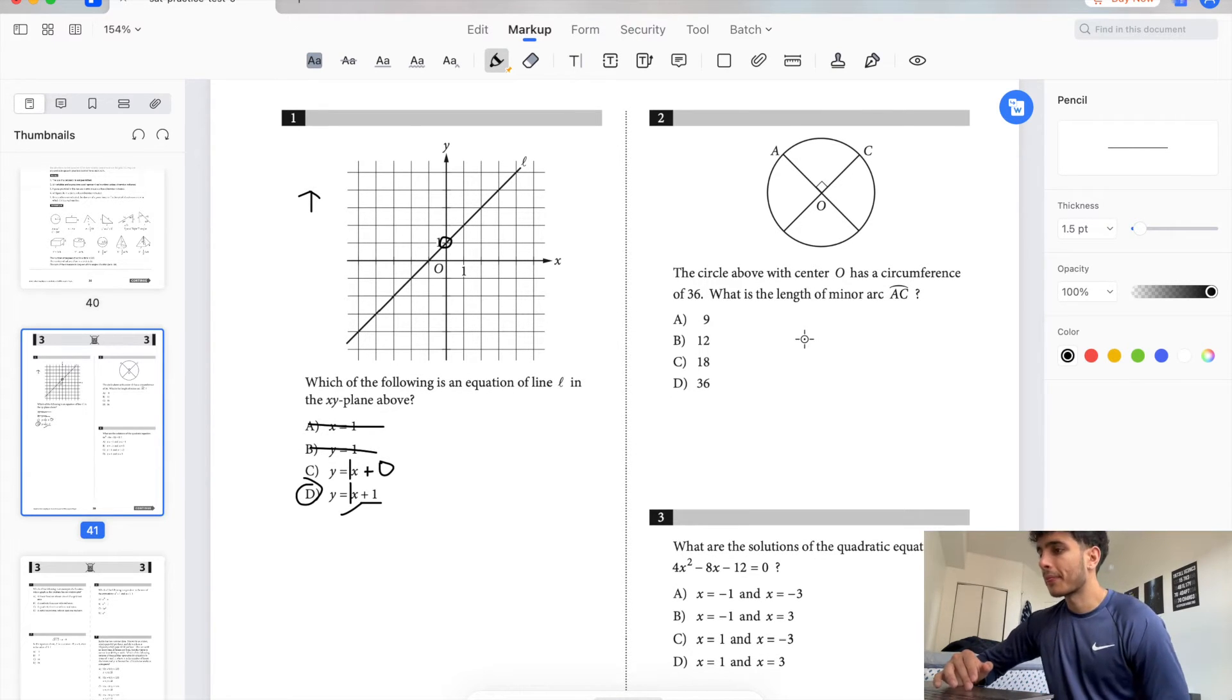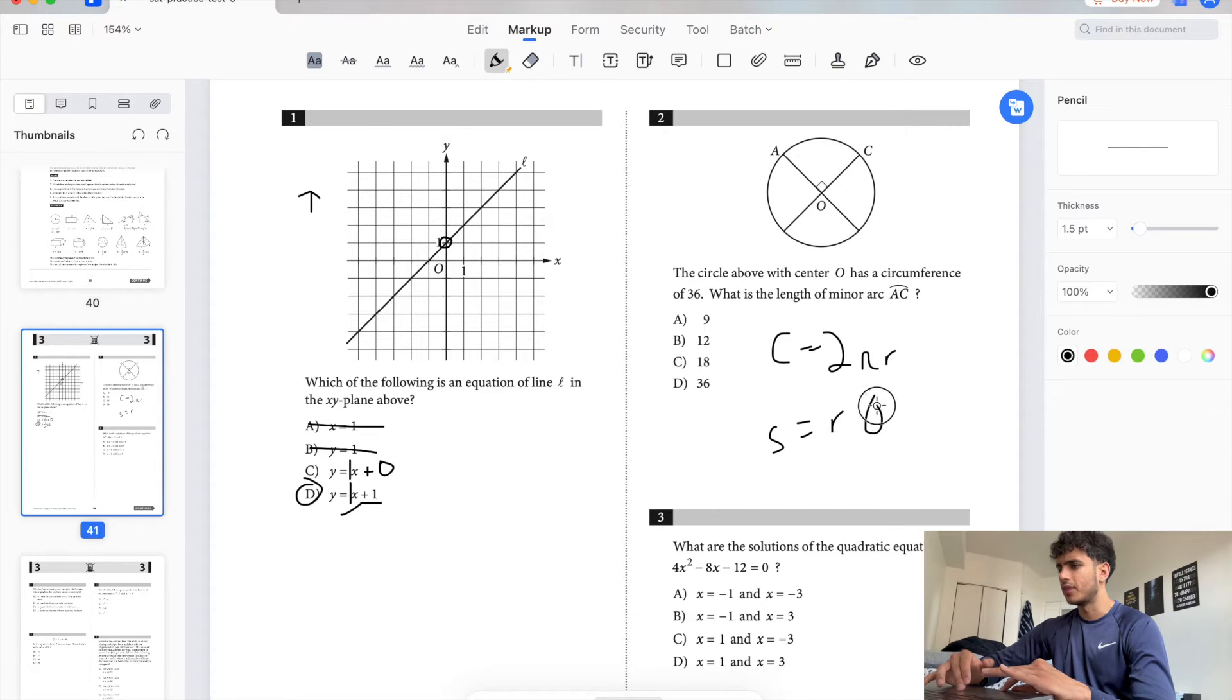Number two, what is the length of minor arc AC? This is like live, I've never done this before. Center O has a circumference of 36. So circumference equals 2πR, and arc is Rθ. Circumference is 36. Maybe we can just divide by 4 because it looks like it's separated equally. So 36 divided by 4, this is 9.